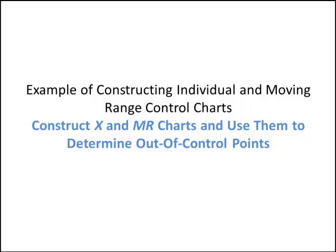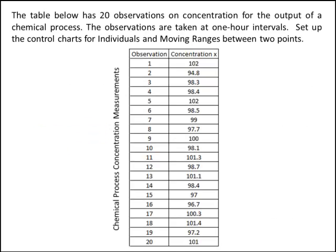In this video you'll learn how to construct individual and moving range control charts, and then we're going to use those charts to determine if there's any out-of-control points on the process that we're studying. Here's the example: the table below has 20 observations on concentration for the output of a chemical process. The observations are taken at one-hour intervals. We want to set up control charts for individuals and moving ranges, and the moving ranges we want to construct the chart for two consecutive points.